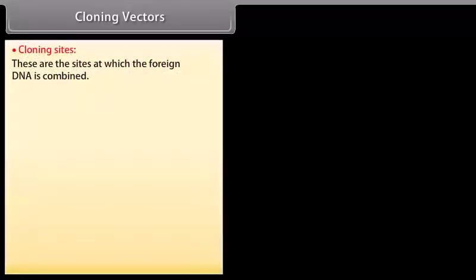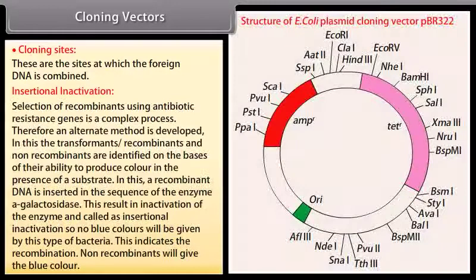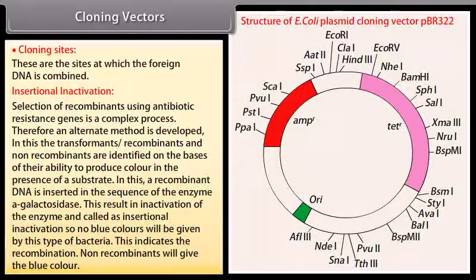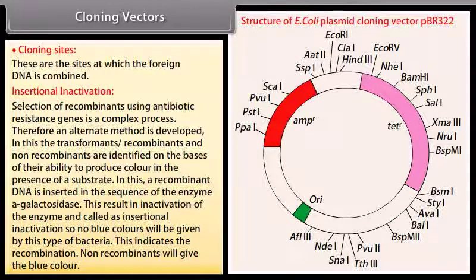Cloning vectors. These are the sites at which the foreign DNAs combined. Insertional inactivation. Selection of recombinants using antibiotic resistance genes is a complex process. Therefore, an alternate method is developed. In this,